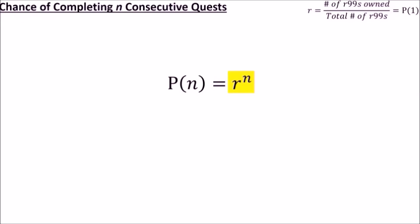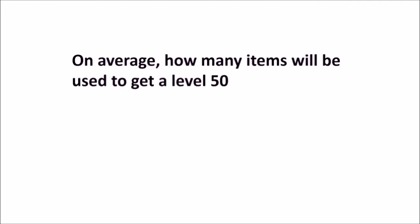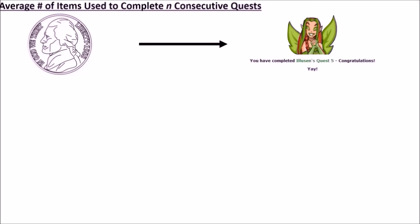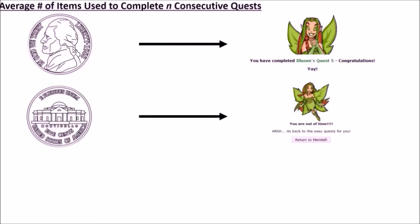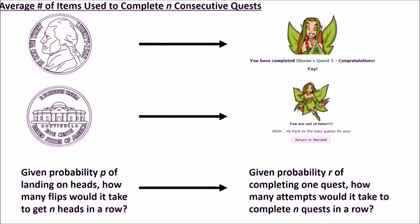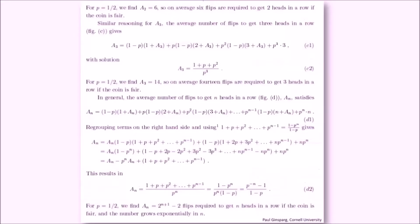But we are more interested in our chances across multiple runs. Specifically, we want to know, on average, how many items will be used to get a level 50 prize. This includes any items used on failed runs since those also eat into your profit margins. To answer this question, we'll treat each quest like a coin flip. Heads means we have the item, and tails means we don't. So the question of how many flips will it take to get n heads in a row is the same as asking how many quest attempts it will take to complete n quests in a row.